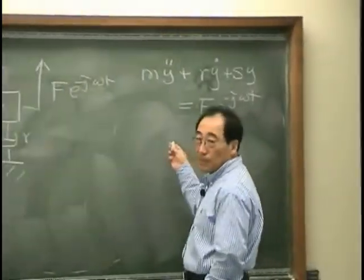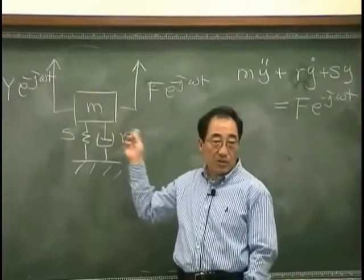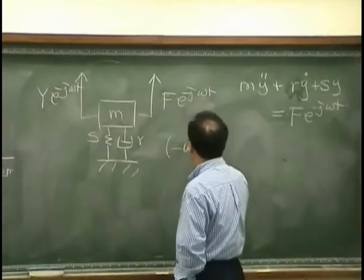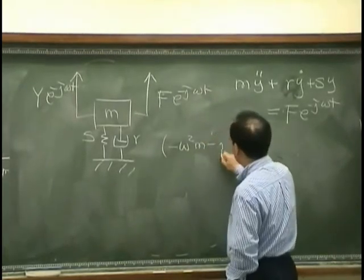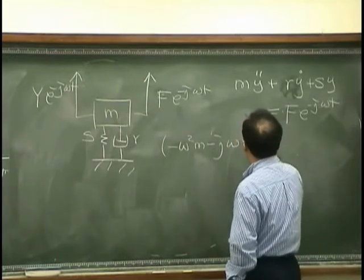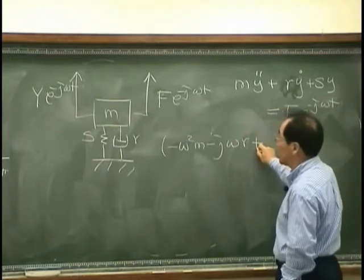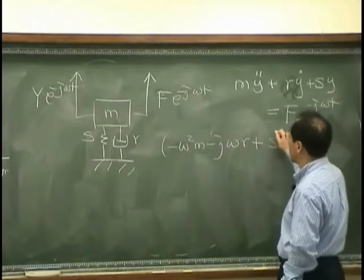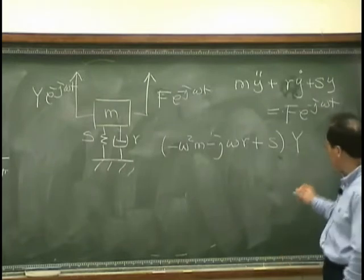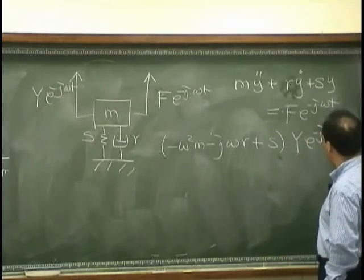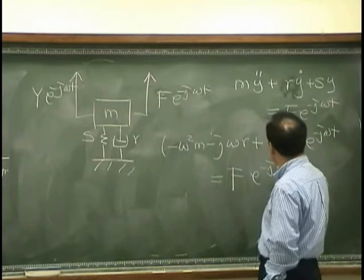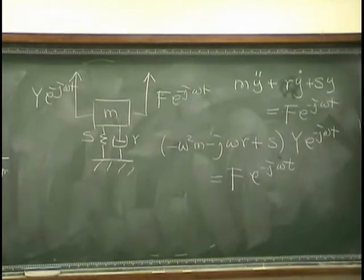Then if I plug these two components, two expressions over here, what I will get is minus omega square M, minus J omega R, plus S. Then I have Y exponential minus J omega T. And also I have F exponential minus J omega T.